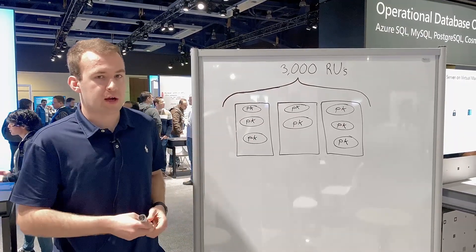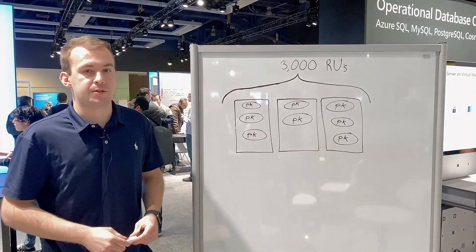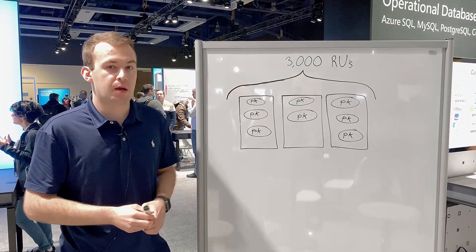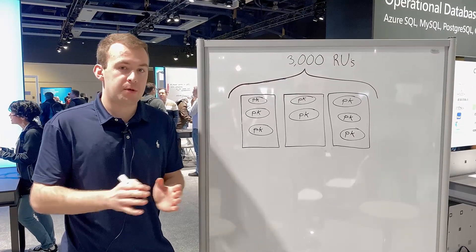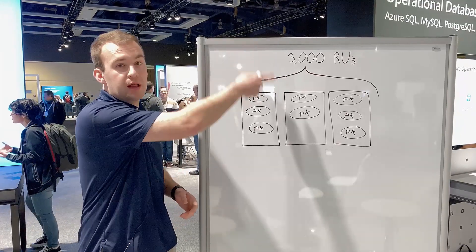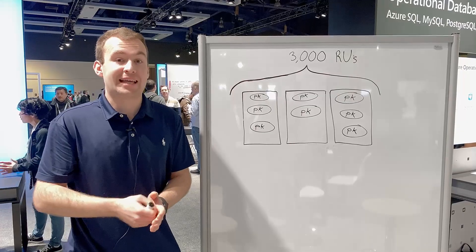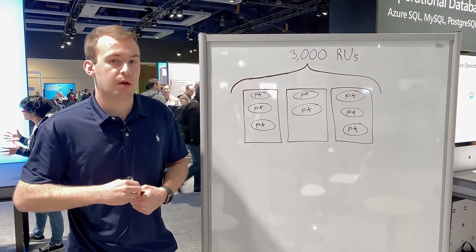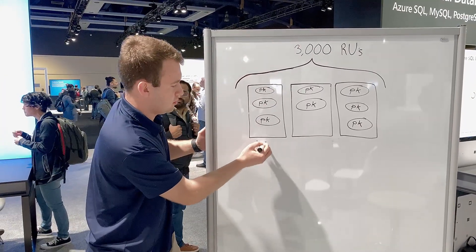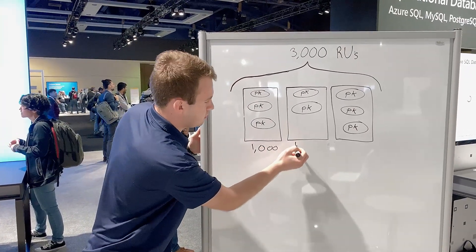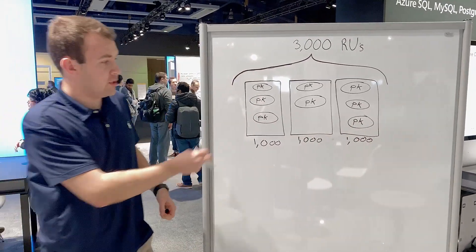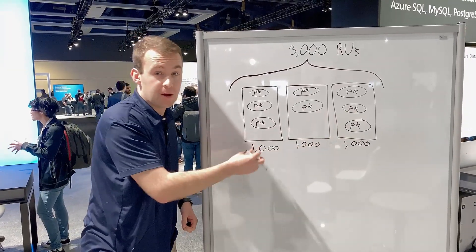Here again, we have a container in Cosmos DB with three different physical partitions. We've provisioned 3,000 RUs on your container. Cosmos DB achieves its scaling magic essentially through partitioning, and we're able to do that by adding partitions as needed to accommodate the RU number. In this case with 3,000 RUs, each individual physical partition gets 1,000 RUs.